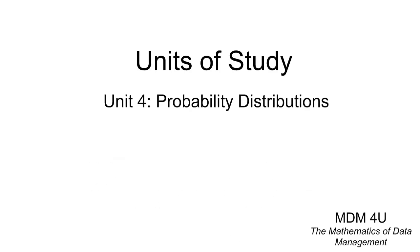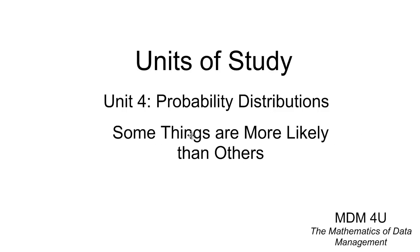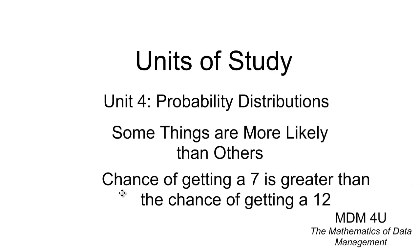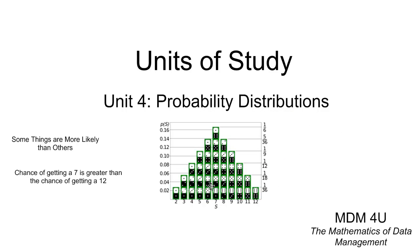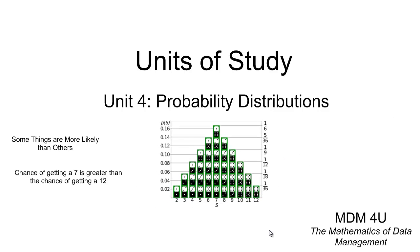For Unit 4, we're looking at probability distributions. The important thing to understand is that some things are more likely to happen than others. For example, when playing Monopoly, the chance of getting a 7 is greater than the chance of getting a 12. It becomes meaningful if we look at how those outcomes of rolling two dice distribute in terms of their probability.